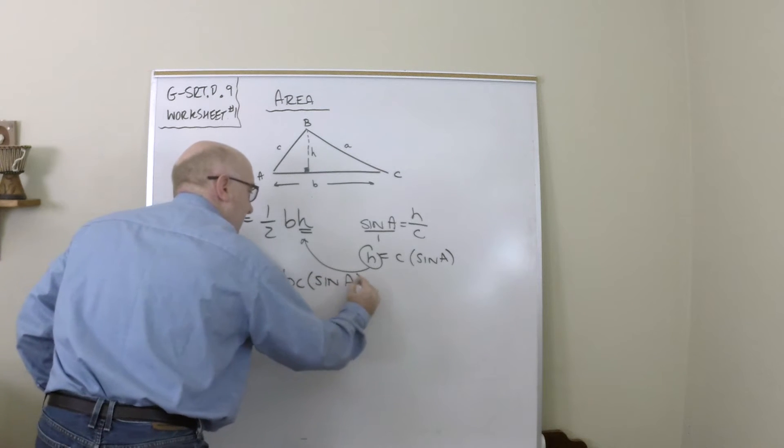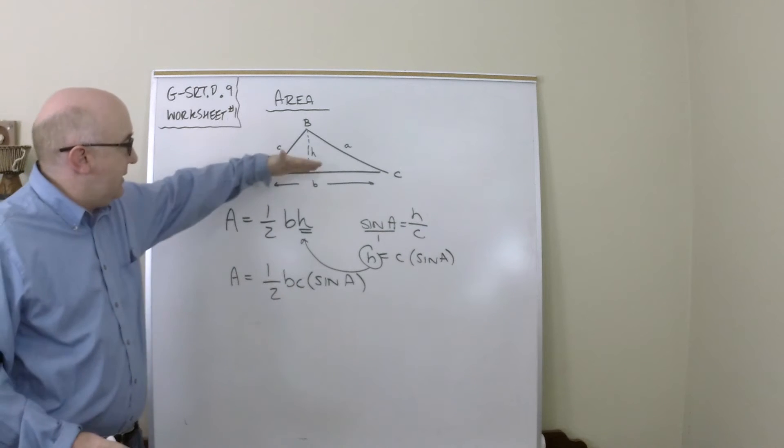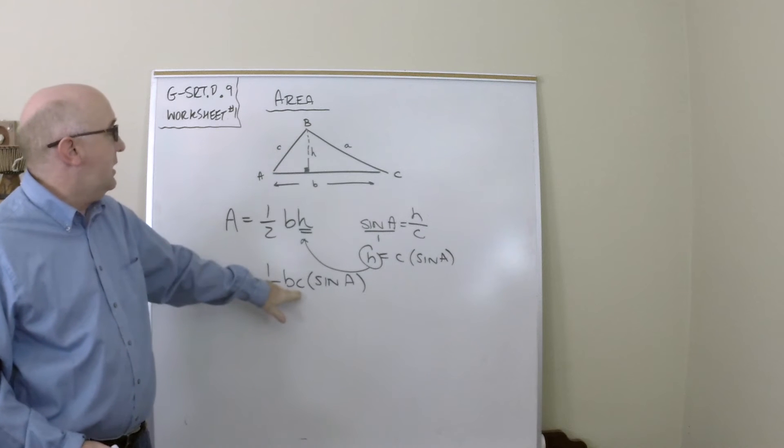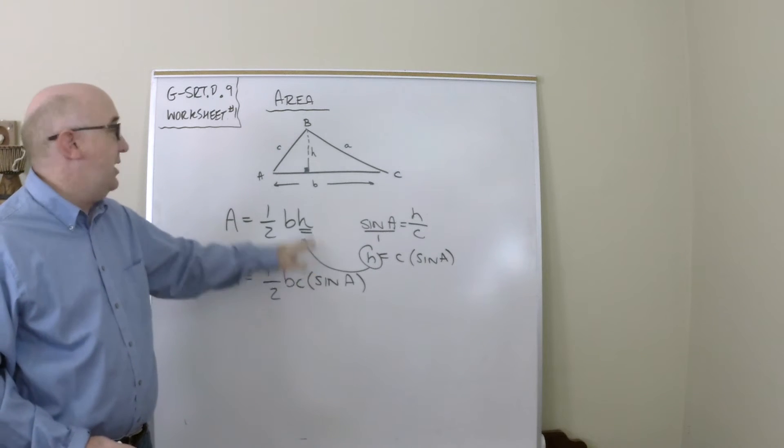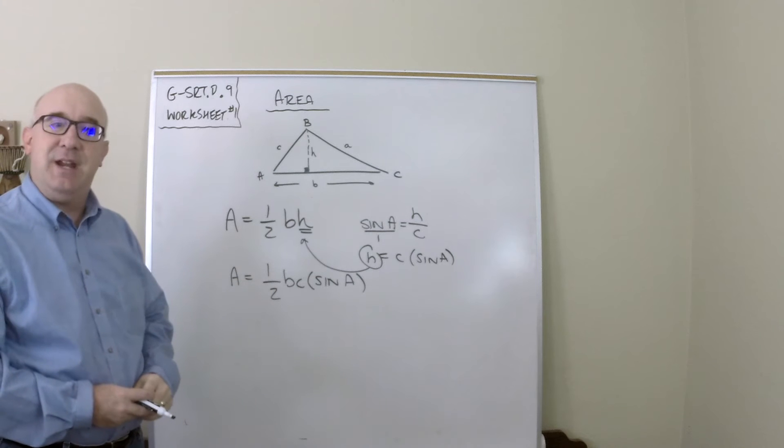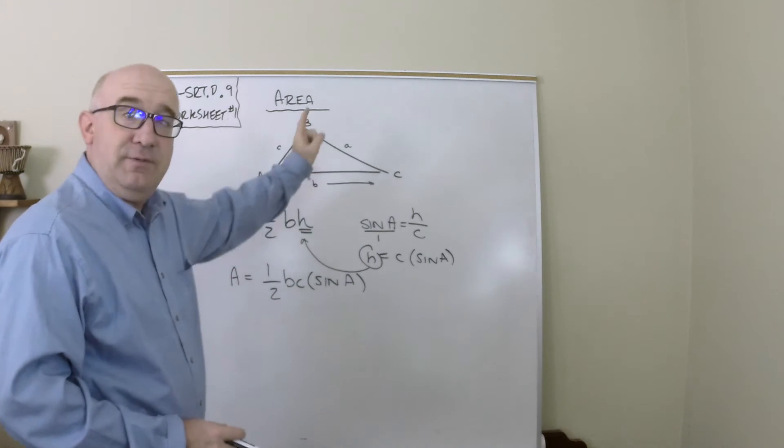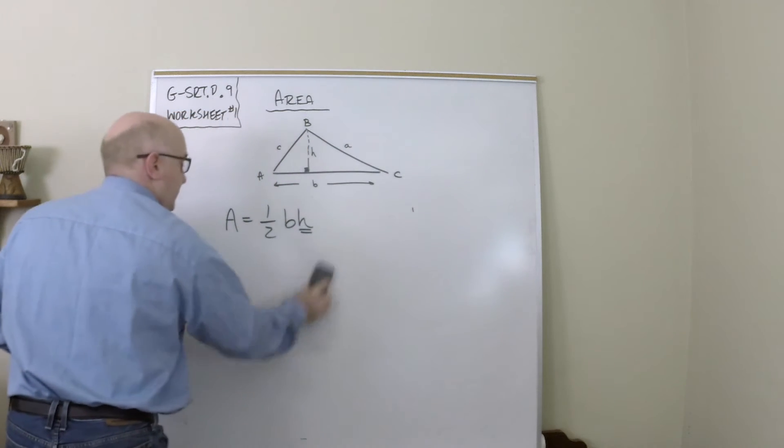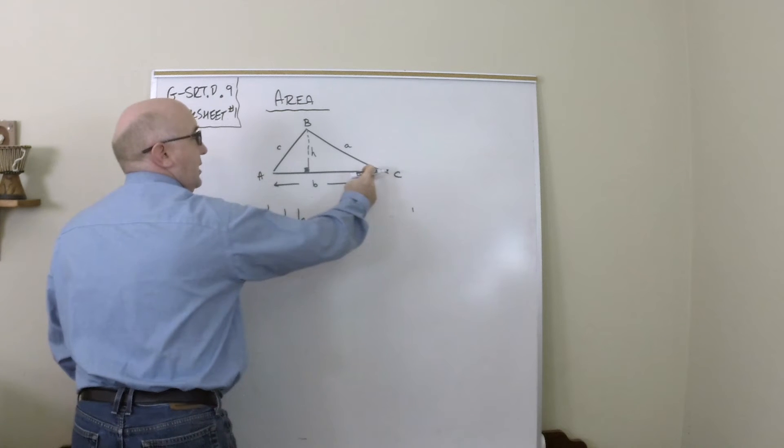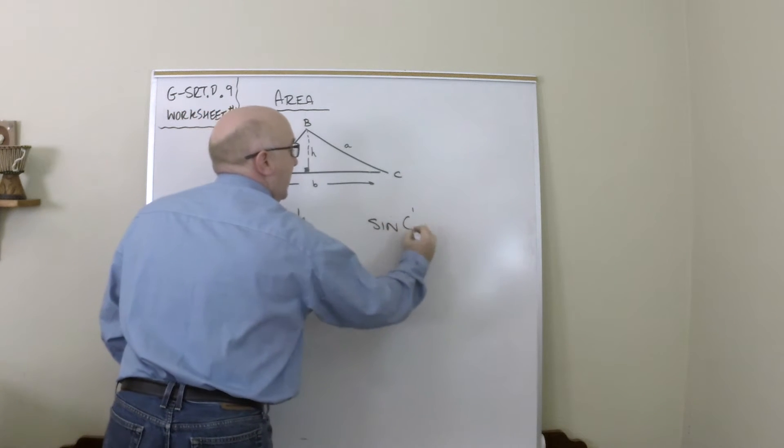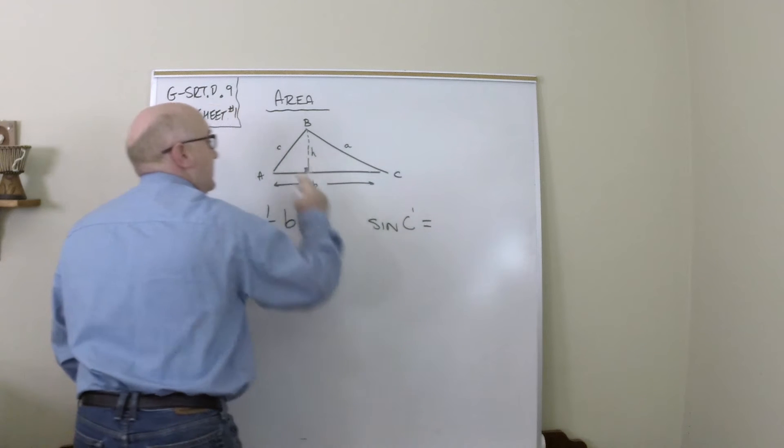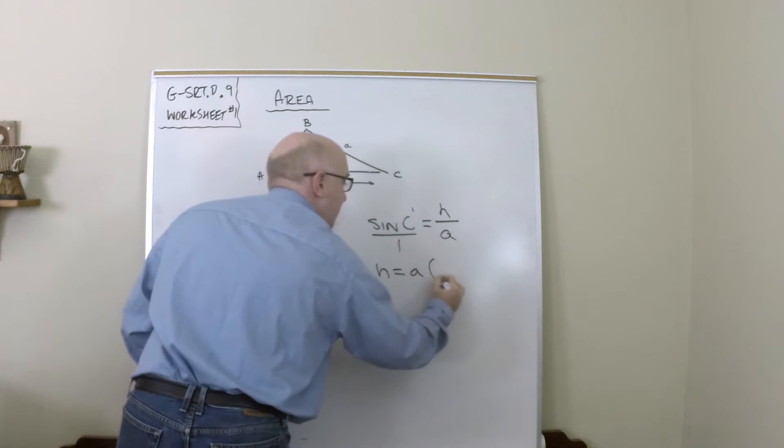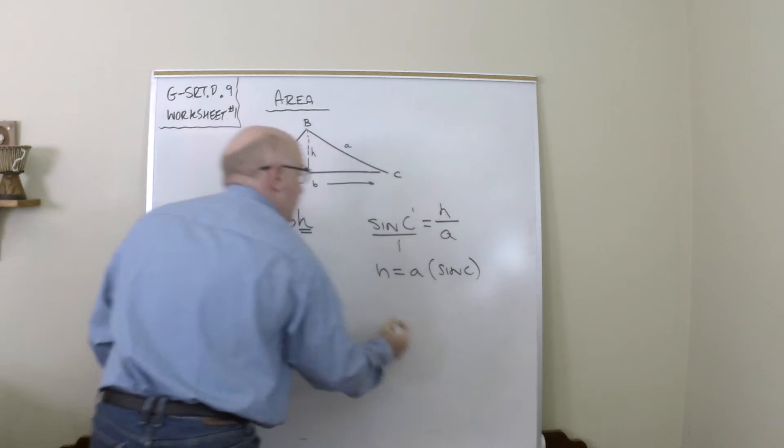So I would multiply the base and this side c together times the sine ratio of A and take half of it, and I would obtain the area. I could have done it from the other side as well. I could have attempted to find the height from this location. That would have been the sine of C is h over a.